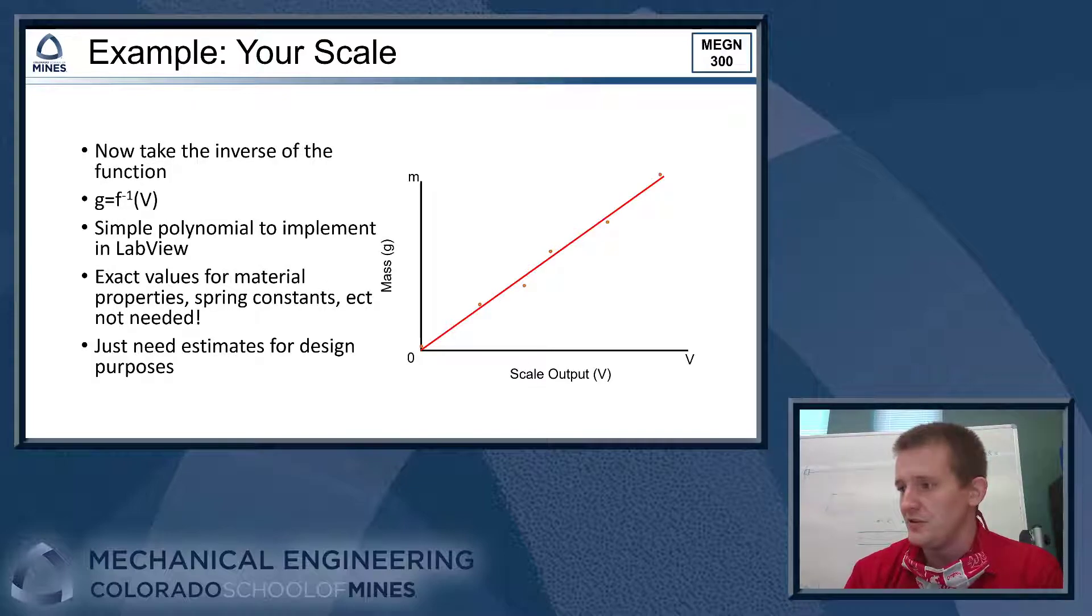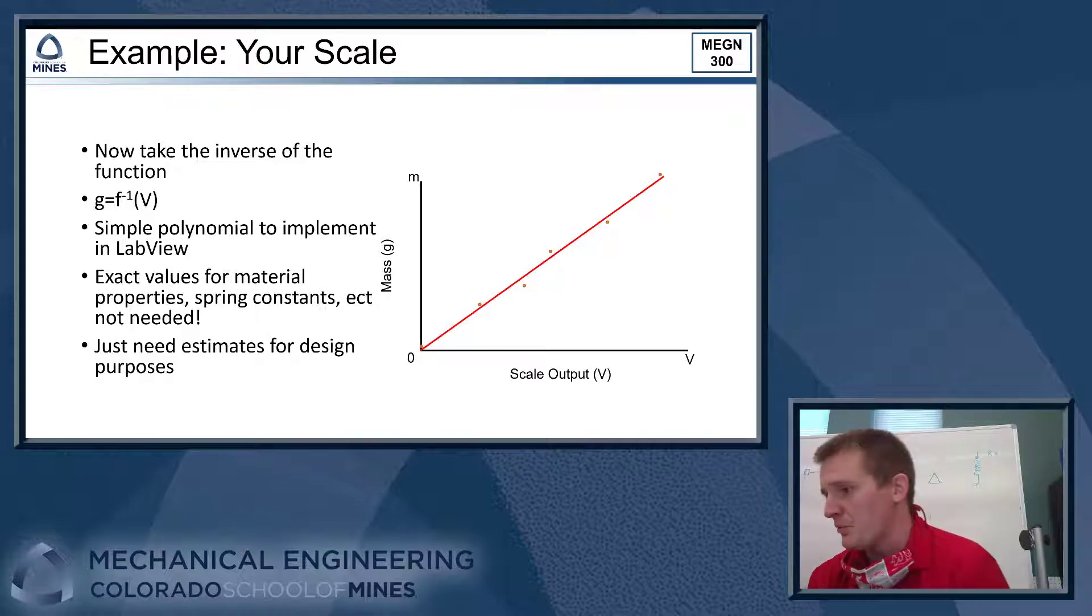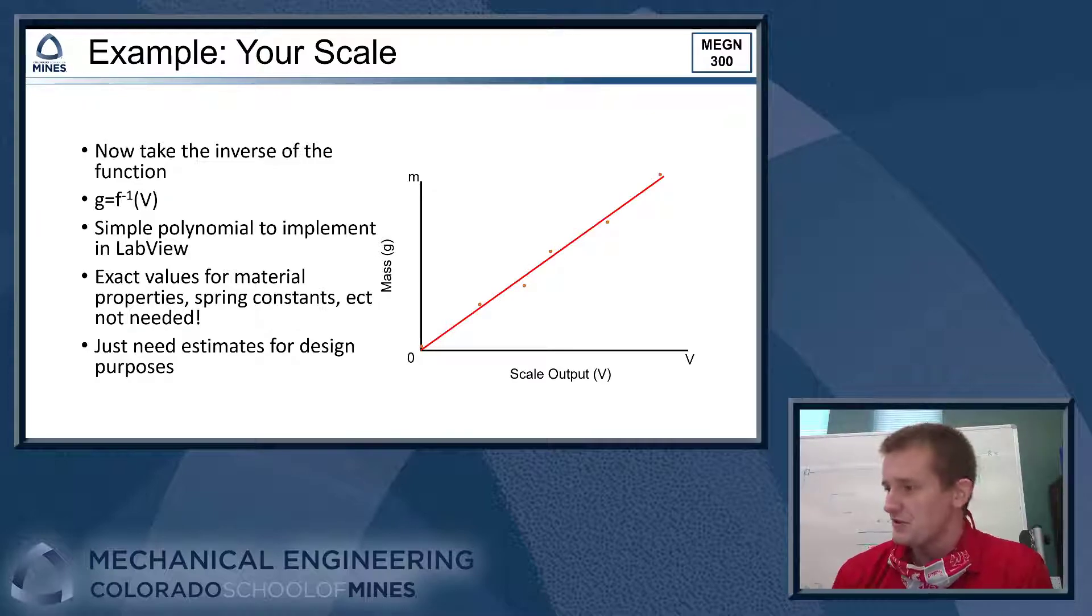Next, what you're going to do is you'll flip your x and your y-axis. So you have the inverse of the function here. So the easiest way to do that is just to replot the data, flipping the x and the y-axis, and then refit the data so that you get a polynomial or a linear function that gives you mass as a function of the scale's response. In this case, it's volts. So the cool thing about this is you don't need to know exactly what the spring constant of the spring in your scale is or exact material properties. All that's getting taken care of by performing this calibration experiment. That polynomial curve, it's all baked into that one. So you don't have to work out the exact values and then come up with this complex mathematical function that converts your scale's response into a mass. It's just handled for you by this calibration curve.